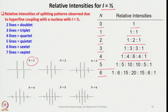For N=1 we see a doublet; N=3 gives a triplet; N=4 gives a quartet; N=5 gives a quintet; N=6 gives a sextet; N=7 gives a septet. This relative intensity diagram holds good for nuclear spin i equals 1/2.